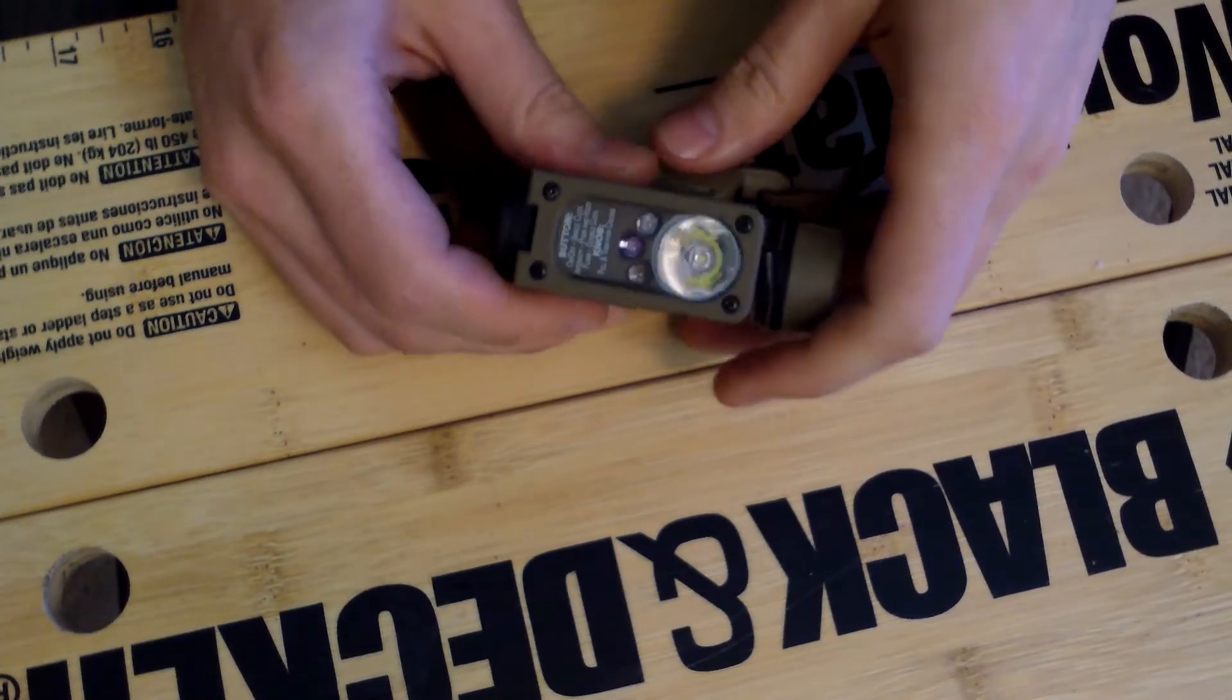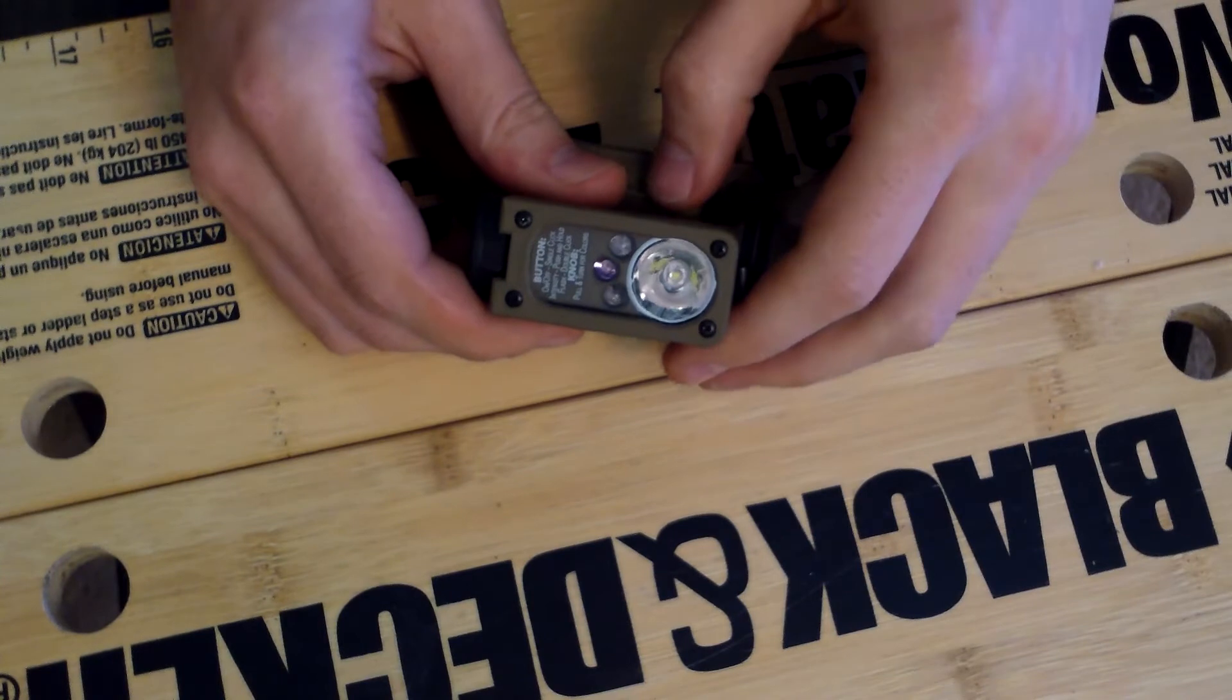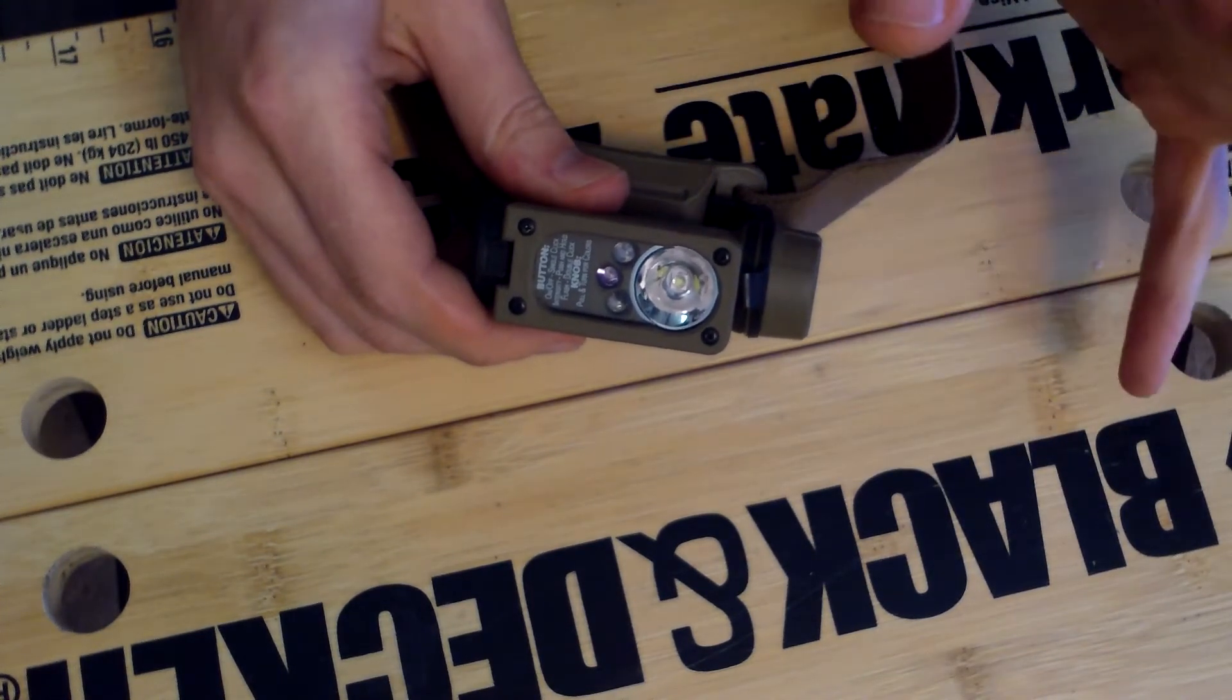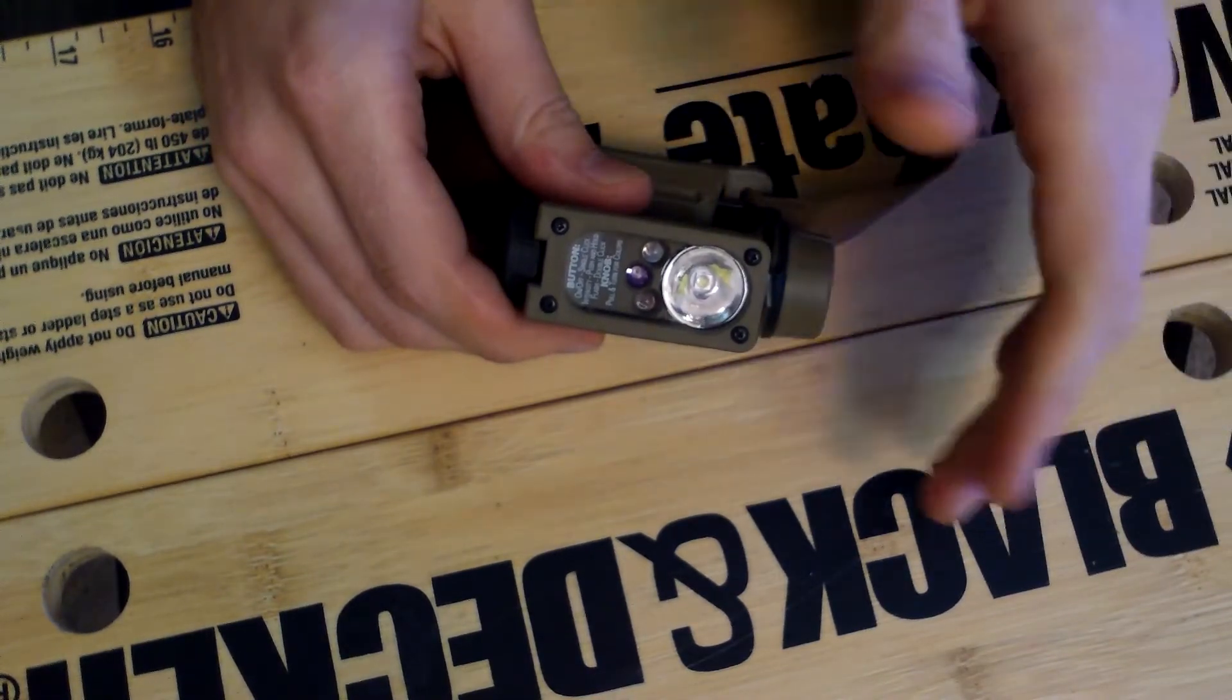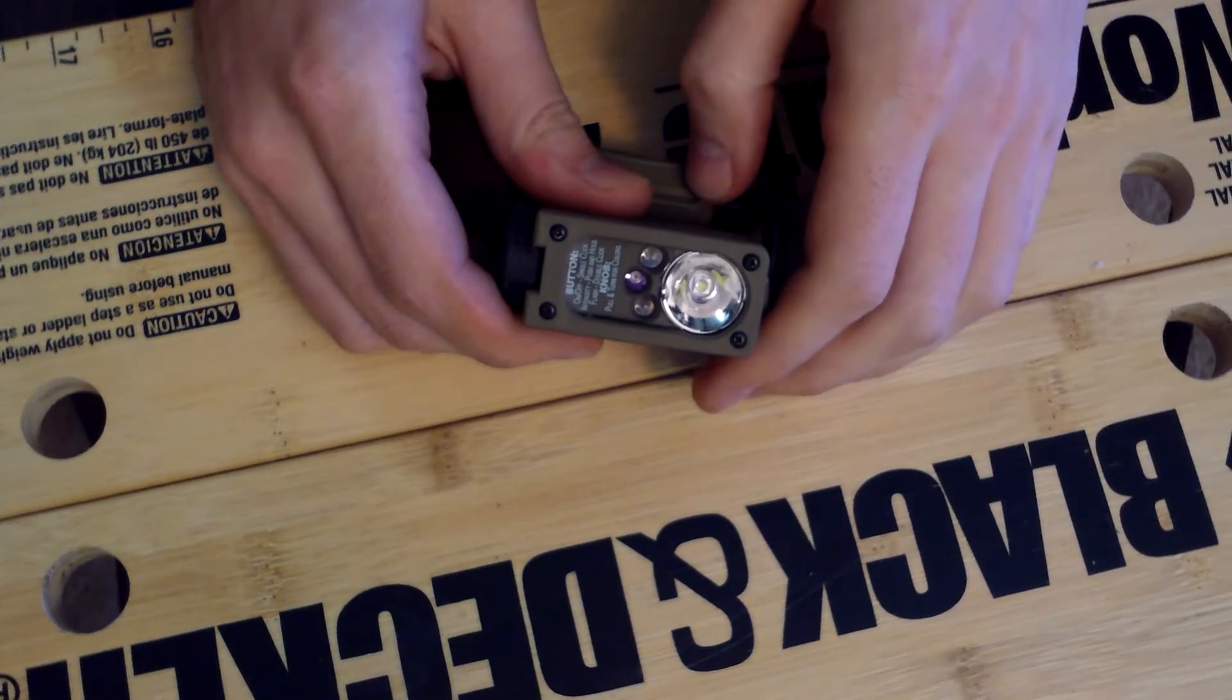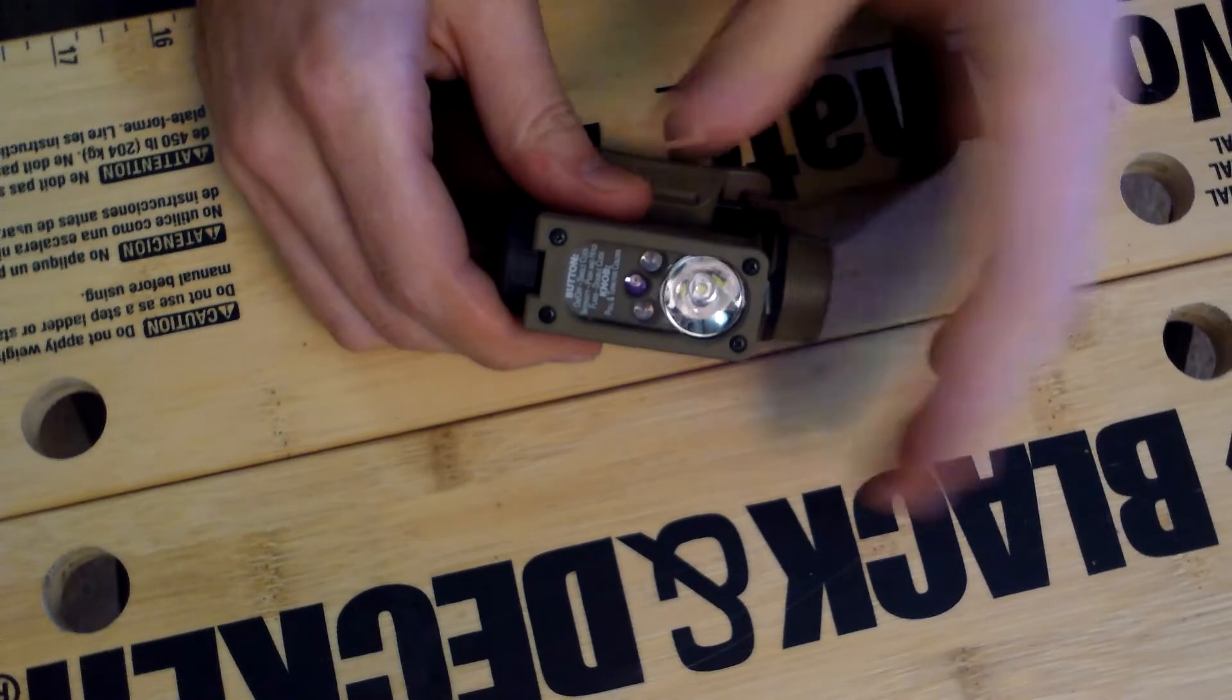And then lastly, the high output for the white light is going to be at 55 lumens and that will last for I believe six hours. Now some people love their lumens. They have to have 100, 150, 500 lumens for their headlamps and their flashlights. And if that's you, well you're at 55 lumens.